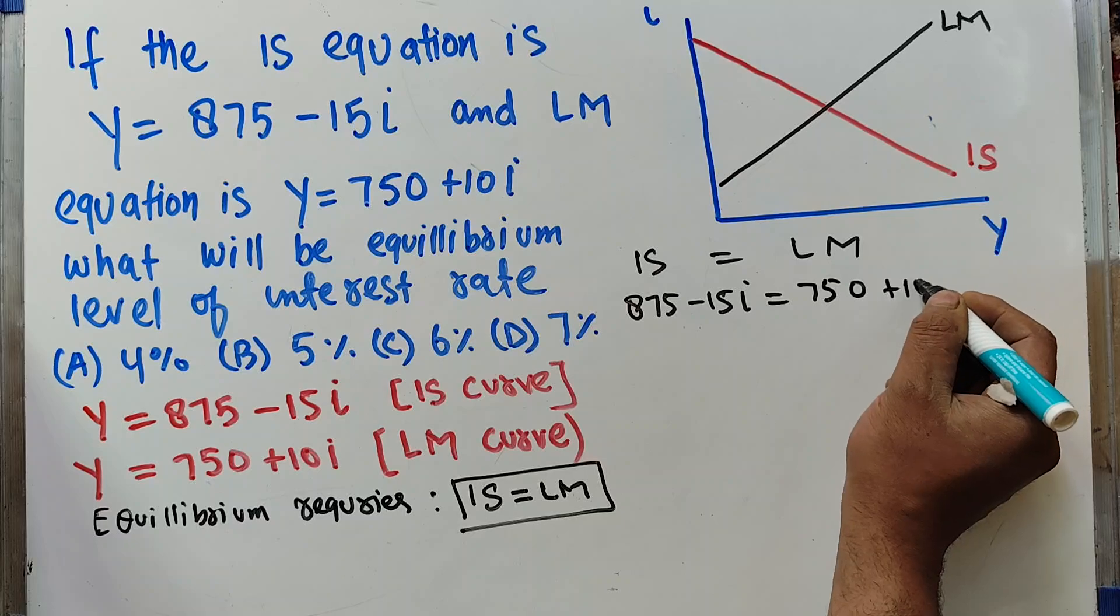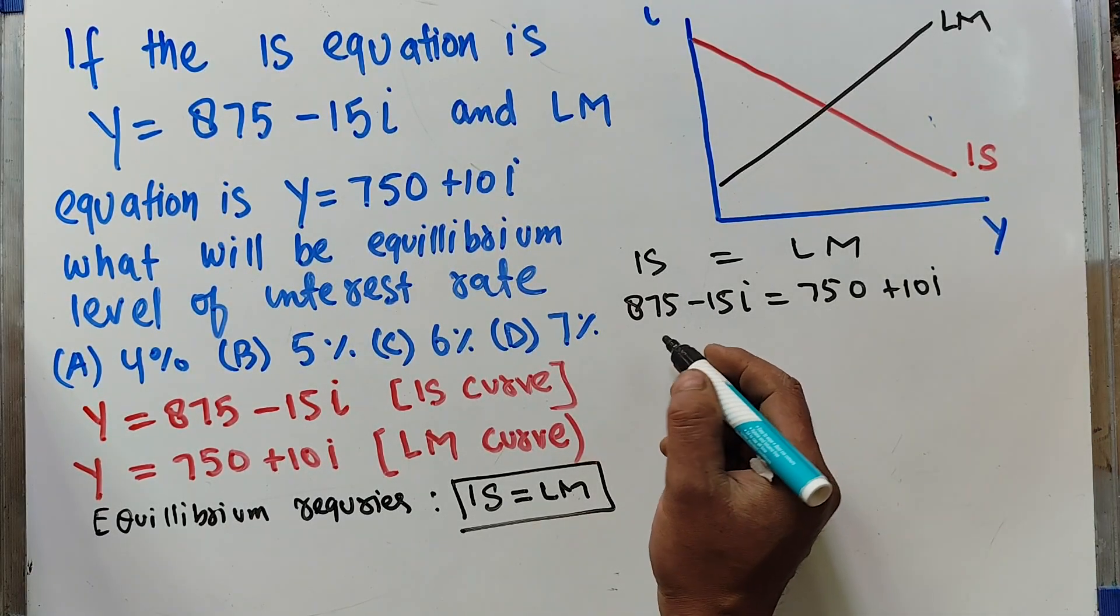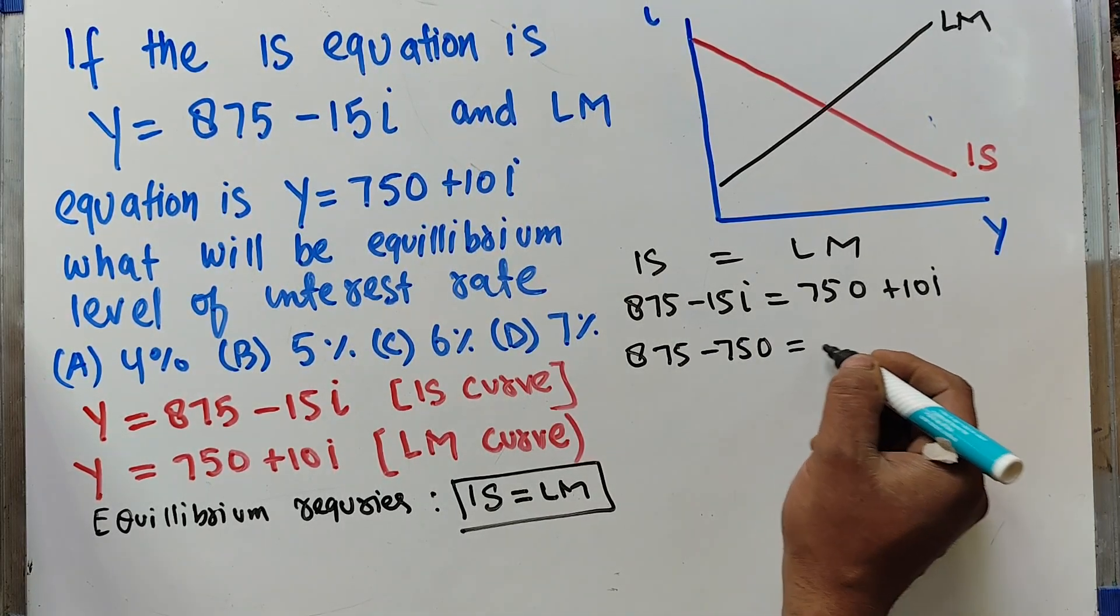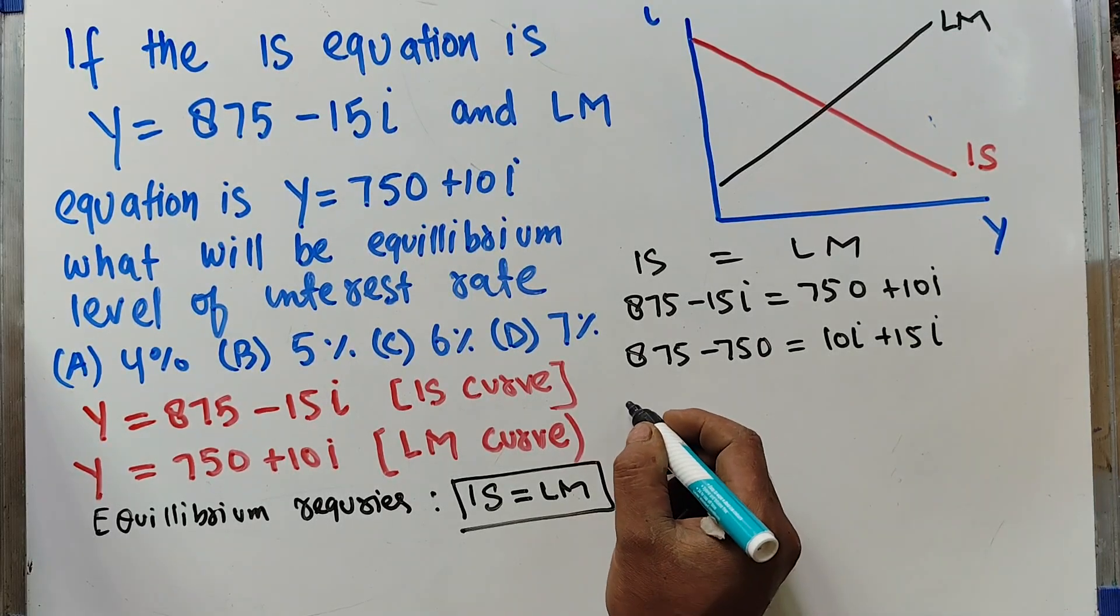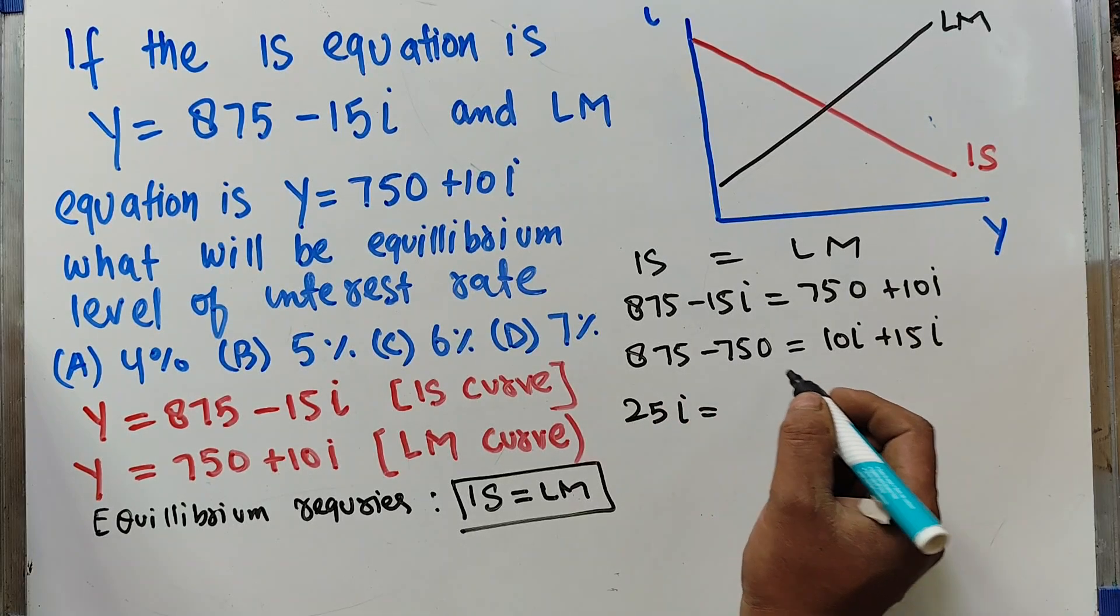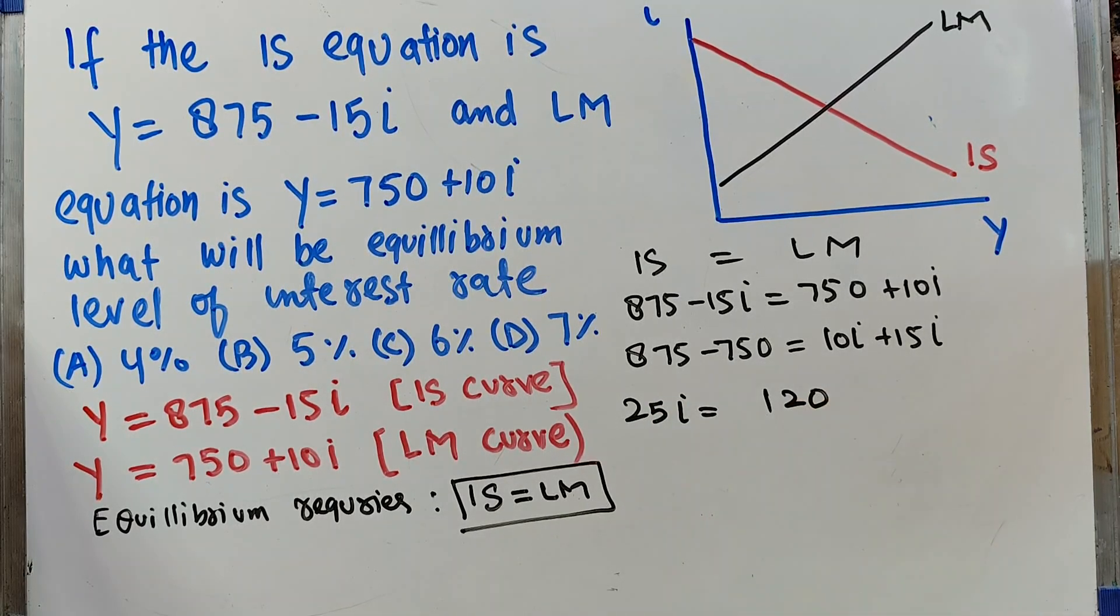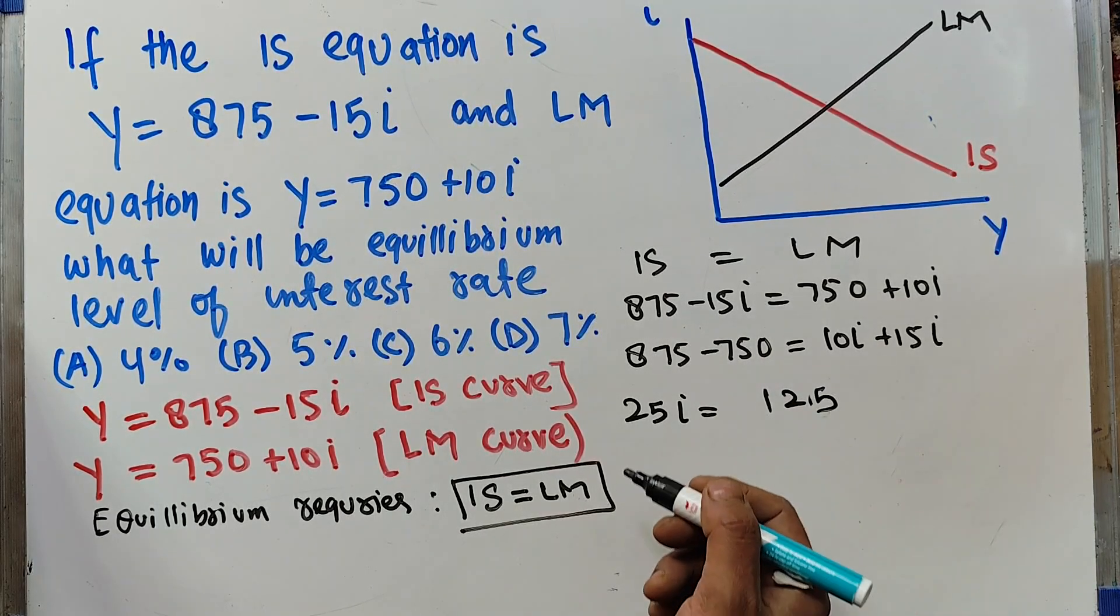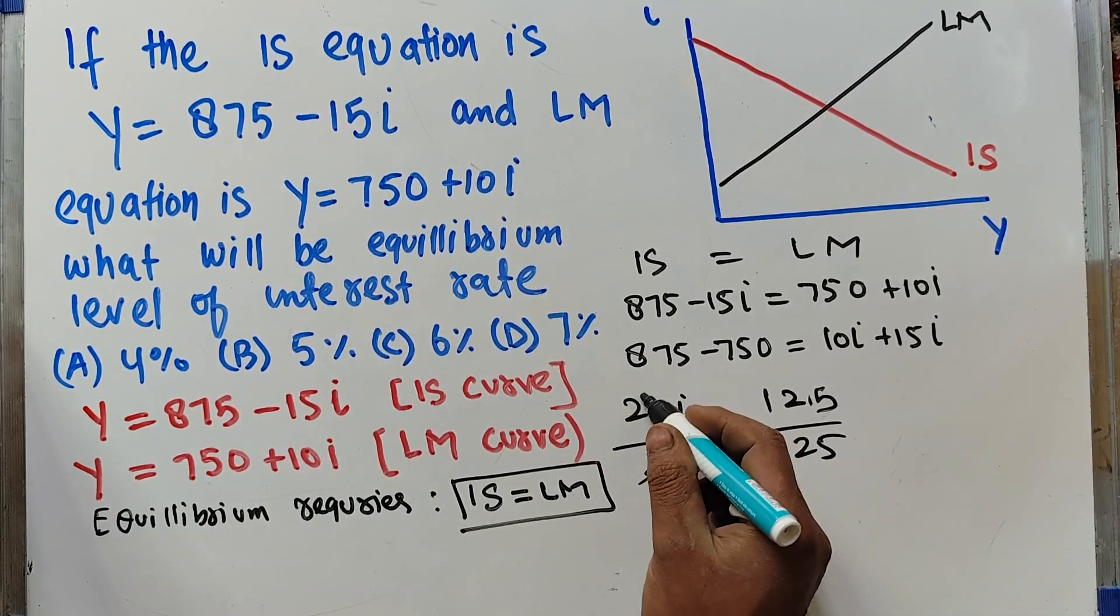Transposing terms, we get 875 - 750 = 10I + 15I. This gives us 125 = 25I. Dividing both sides by 25, we get I = 5. The equilibrium level of interest rate is 5%.